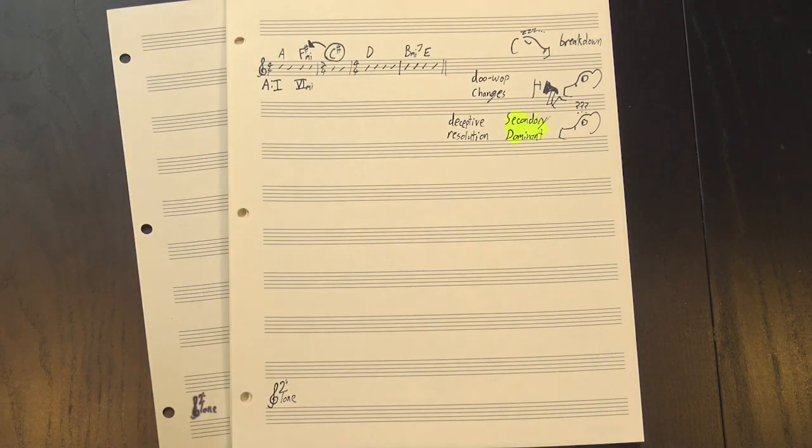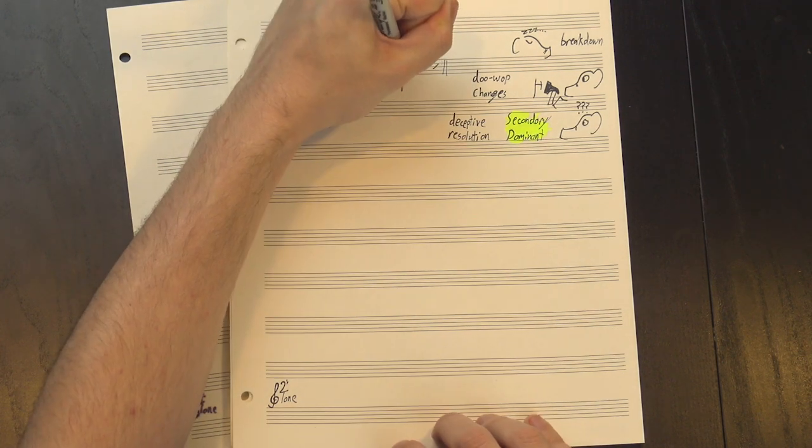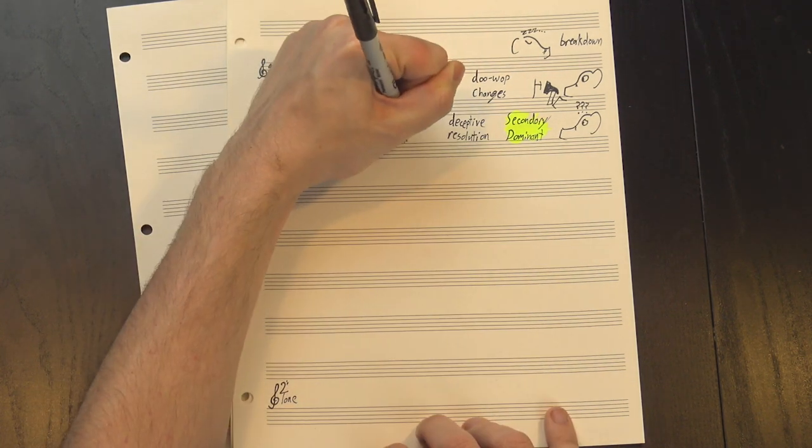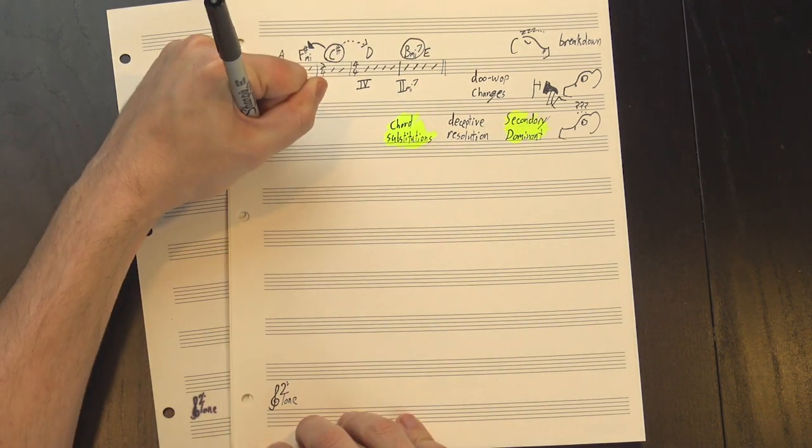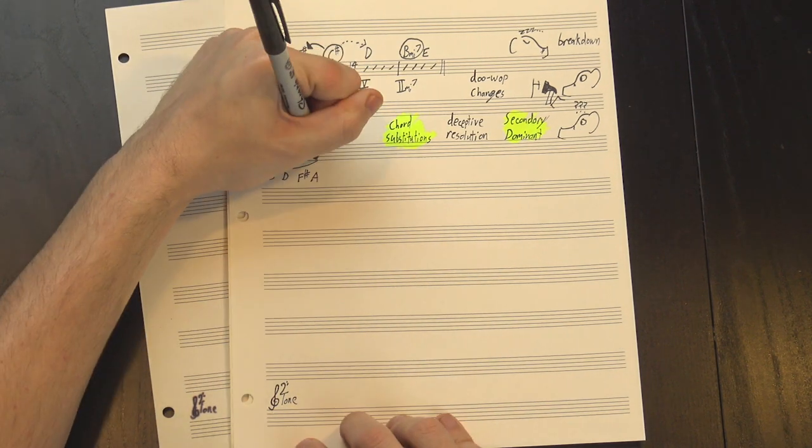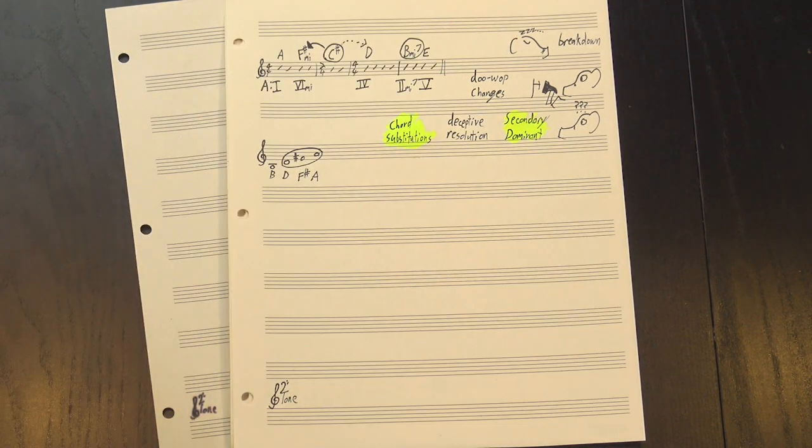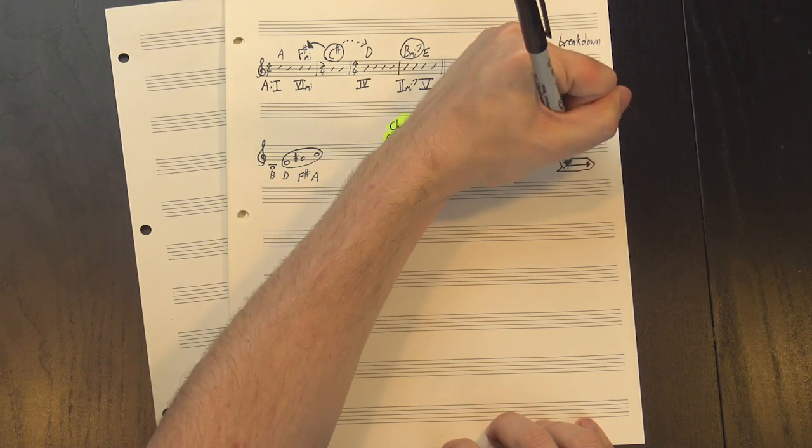we get another deceptive resolution to D the IV, then we hit this chord, the II minor VII. This is actually a substitution for the IV chord. If we look at the notes of B minor VII, we see the notes of D major inside it. Then we go to the V chord, which again has dominant function, and points us back to the I.